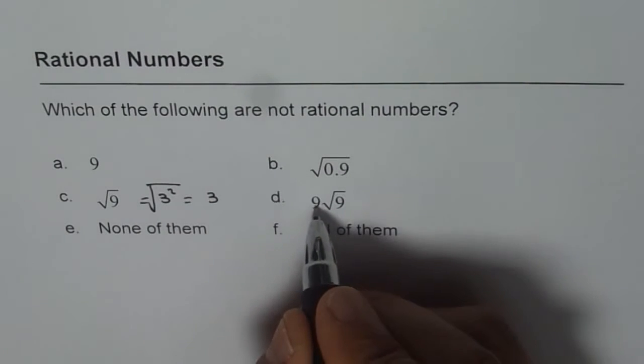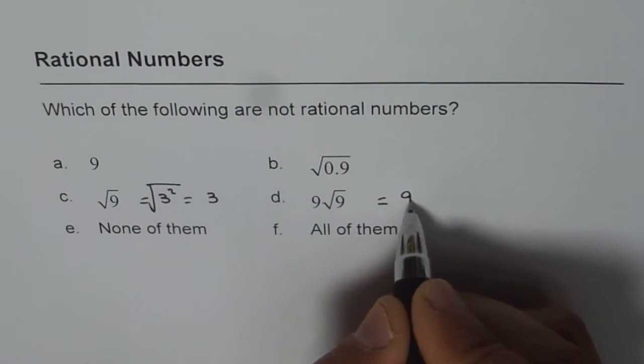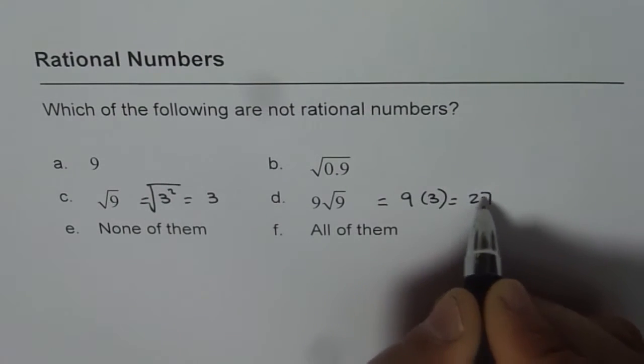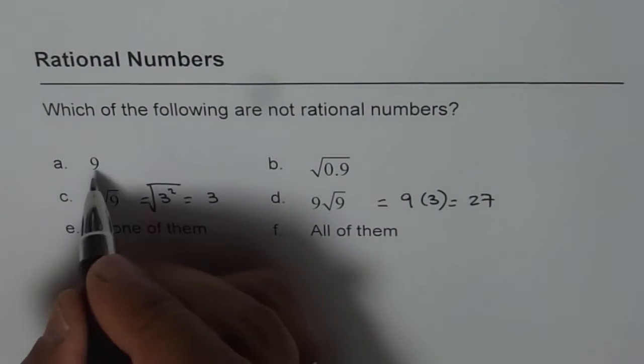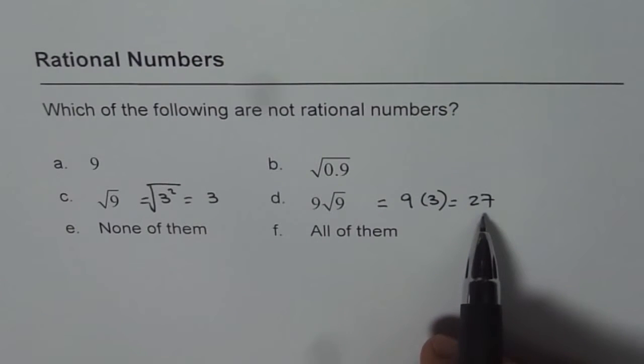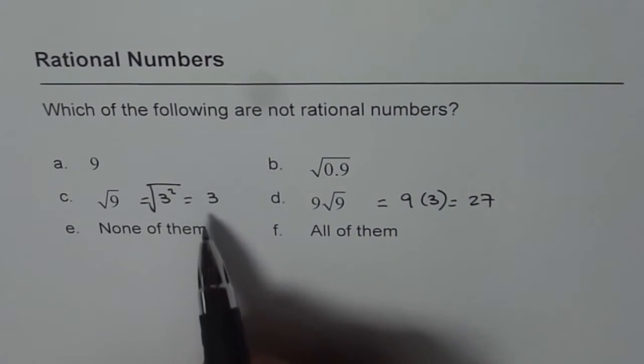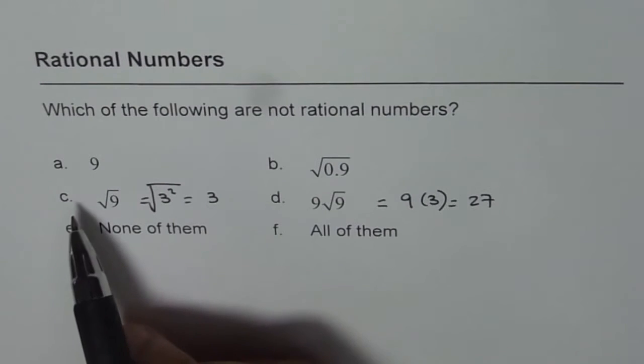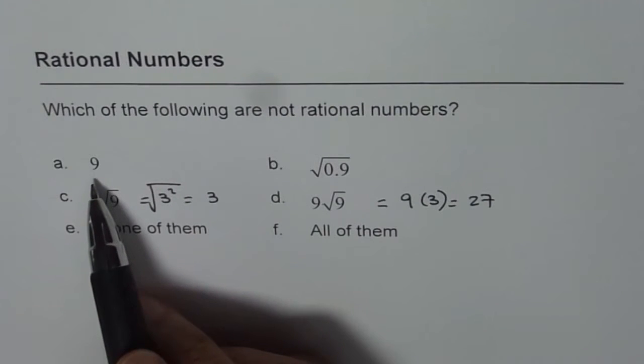Similarly, this number is 9 times 3, which is 27. 9 is a rational number. All these numbers can be written as 27 over 1, or 3 over 1, or 9 over 1. So it is a quotient of 2 integers.